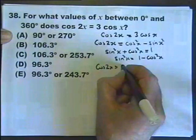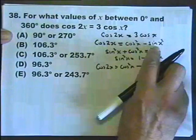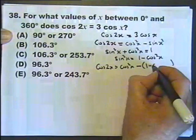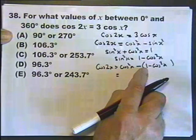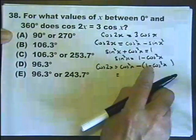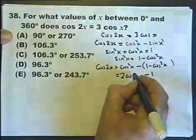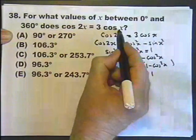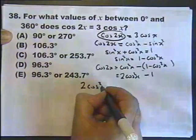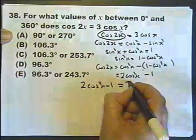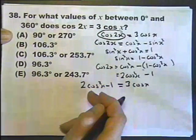So cosine 2x equals cosine²x minus sine²x, which I replace with that substitution. You get cosine²x minus 1, and minus minus that makes a plus, so I have cosine²x plus cosine²x — two of those. This means I've done two things: made it all in just x rather than x and 2x, and made it an equation with cosines only.